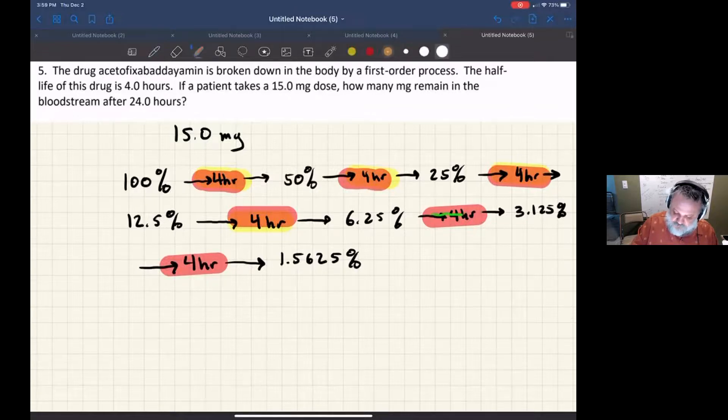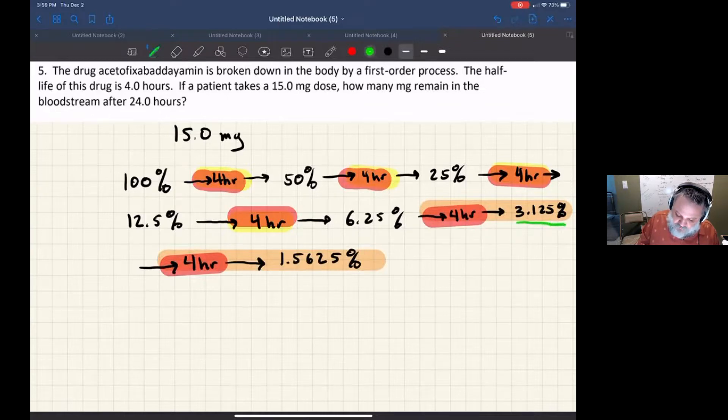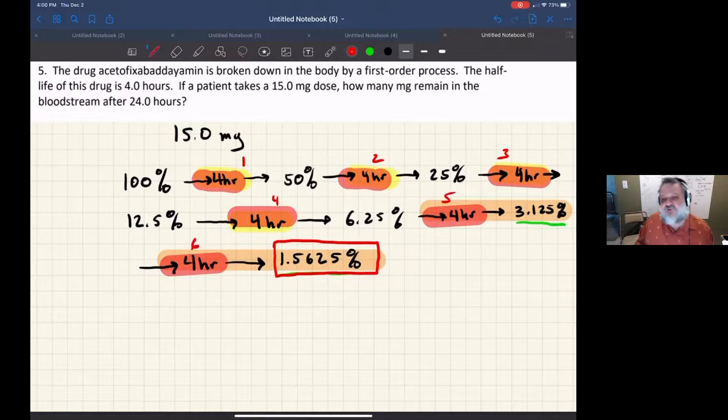So that means it would be between 3.125% and 1.5625% of the original concentration. But since it was exactly 24 hours, exactly 6 half-lives, 1, 2, 3, 4, 5, 6 half-lives, then it's 1.5625% of the original dose.